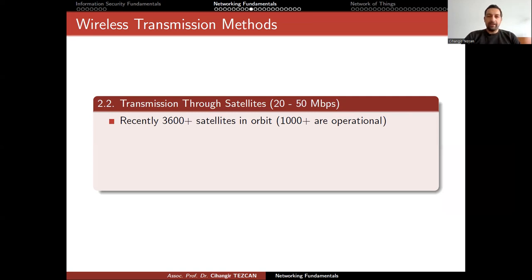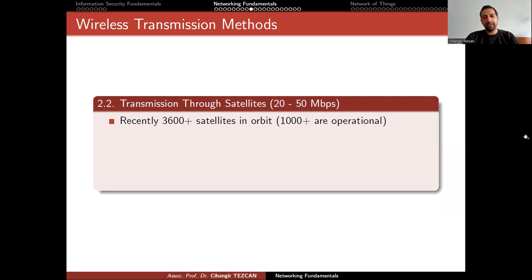Recently — though we have to increase this number maybe a few thousands every year — thanks to Starlink, there are now a lot of satellites orbiting around the Earth. These numbers are a little bit higher, which is why I left a plus sign here.